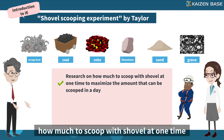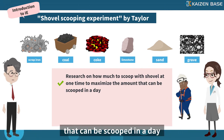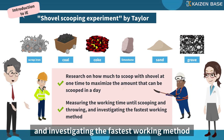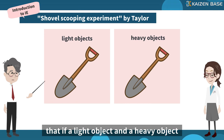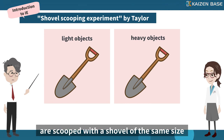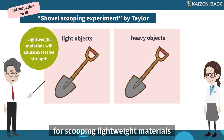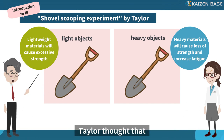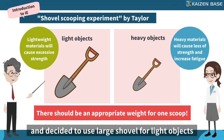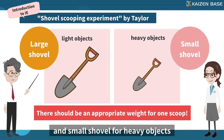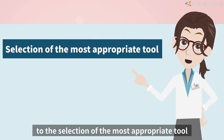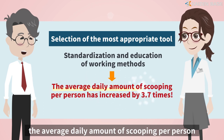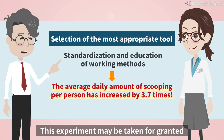Taylor researched how much to scoop with a shovel at one time to maximize the amount that can be scooped in a day. The research was conducted by measuring the working time for scooping and throwing, and investigating the fastest working method. As a result, it was found that if a light object and a heavy object are scooped with a shovel of the same size, excessive strength will be required for scooping lightweight materials, while loss of strength and increased fatigue occur for scooping heavy materials. Based on this result, Taylor decided to use a large shovel for light objects and a small shovel for heavy objects. As a result of the standardization and education of working methods, the average daily amount of scooping per person increased by 3.7 times.